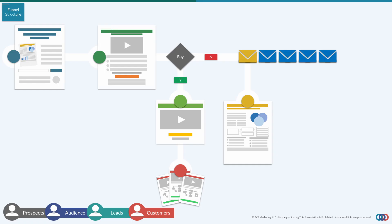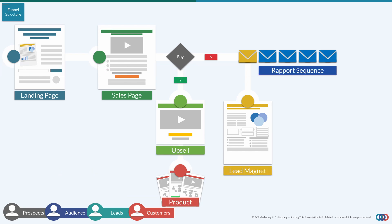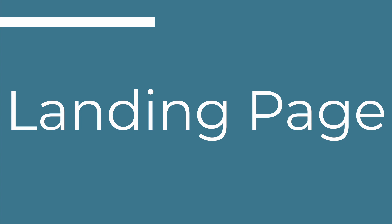First, we have our landing page to collect contact information. Then, something a little counterintuitive — because we're on a free plan — we're actually going to immediately send people to our sales page, also known as an OTO or one-time offer page. We'll have a countdown timer and a great discount. After that, we can offer another product or service as an upsell, and finally we'll go through the email automations available on the free plan. If you do affiliate marketing, systeme.io also allows that on their platform.